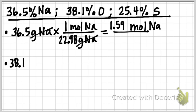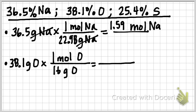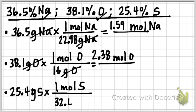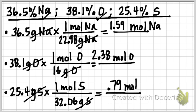I'm going to take care of my oxygen. At 38.1% oxygen, I'm going to convert it to grams of oxygen, and follow that same format. One mole of oxygen equals 16 grams of oxygen. My grams of oxygen cancel, 38.1 divided by 16, and now I have 2.38 moles of oxygen. Now for sulfur, I have 25.4% of sulfur, and I'm going to change it to grams. One mole of sulfur gives me 32.06 grams of sulfur. My grams of sulfur cancel, 25.4 divided by 32.06, and now I have 0.79 moles of sulfur.